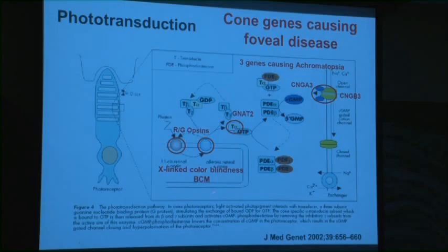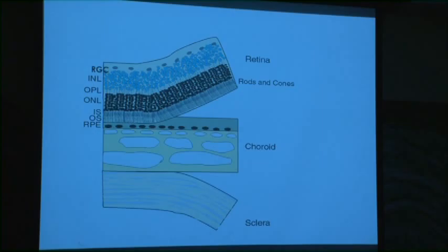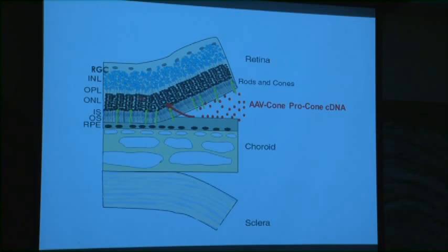We're narrowing in on a one-vector-fits-all cone application. Why target cones? If you looked at the retinal vasculature of a primate, you'd notice something unusual in the middle — the avascular region over the foveal cones. Because it's avascular, you have the highest acuity in the foveal cones, which is a key reason for studying and treating cone diseases.